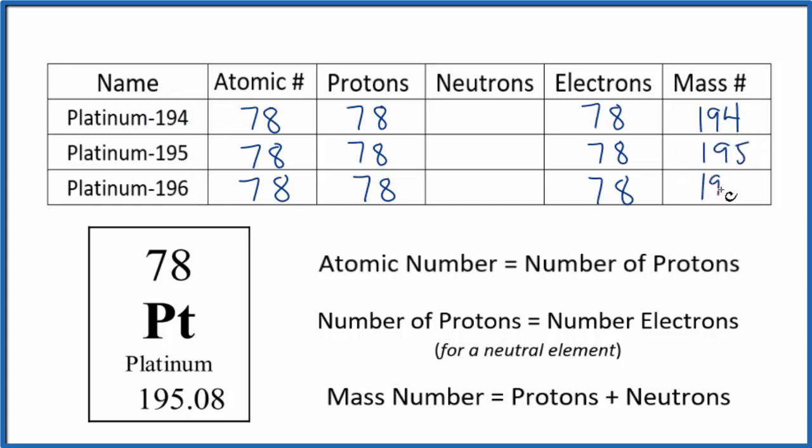So now that we know the mass number and we know the number of protons, the mass number equals the number of protons plus neutrons. So protons plus some number here will give us 194. So 116, 78 plus 116, that gives us 194.